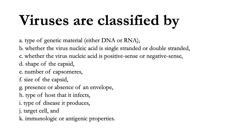Viruses are classified by the following characteristics. First, the type of genetic material they possess — either DNA or RNA. DNA is always a single molecule, while RNA can exist as a single molecule or in several pieces. Second, whether the virus's nucleic acid is single-stranded or double-stranded. Third, whether the virus's nucleic acid is positive sense or negative sense. This plays an important role in how a virus codes for new genes and replicates. A positive-sense single-stranded RNA can be translated directly to form proteins using the host ribosome, whereas a negative-sense strand must be transcribed first into a positive strand before coding for new viral proteins.